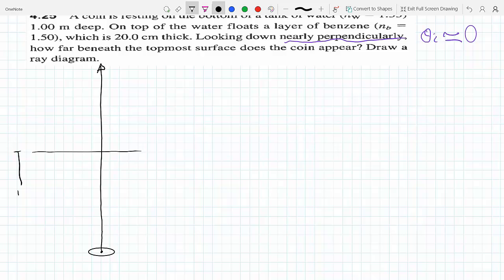The water rises all the way till here, so this height is one meter and n_w here is 1.33. Let's extend this and this is the layer of benzene here, 0.2 meters, and n_b here is 1.5. This is the air, so n equals 1.